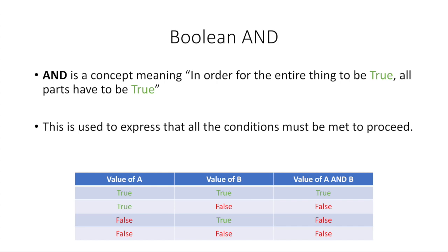Now the next concept is called AND. AND is a concept in Boolean logic, meaning in order for the entire thing to be true, all the parts have to be true. This is used to express that all the conditions must be met to proceed. So we have two conditions — A and B — and each one is its own condition. If both the value of A and the value of B are true, then the value of the expression A AND B is going to be true. If A is true and B is false, that's false. If A is false and B is true, A AND B is still false. And if both are false, that's also false. They both have to be true for it to be true.